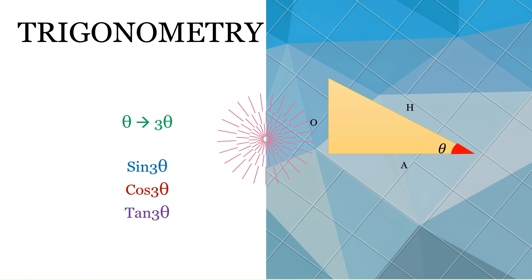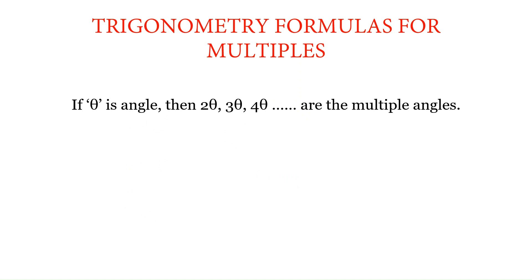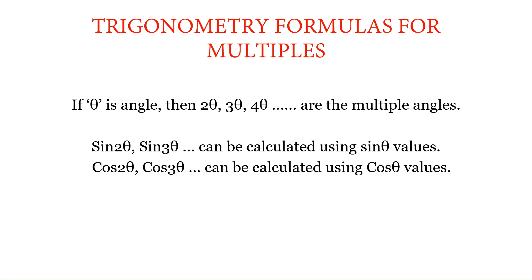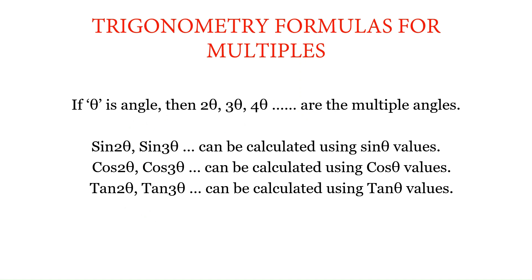In this session on trigonometry, we'll see how to derive formulas for sin 3θ, cos 3θ, and tan 3θ. 3θ means it's a multiple of theta — the multiples can be anything like 2θ, 3θ, 4θ, and so on. Derivation of 2θ is done in a different video; you can find the link in the description. When we know sin θ, we can derive sin 2θ and sin 3θ. Similarly, cos θ helps derive cos 2θ and cos 3θ, and tan θ helps derive tan 2θ and tan 3θ.